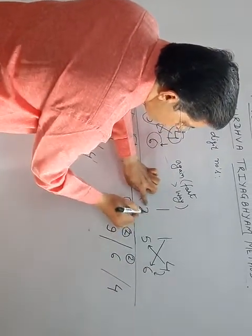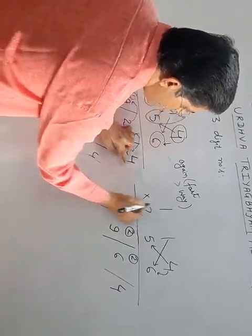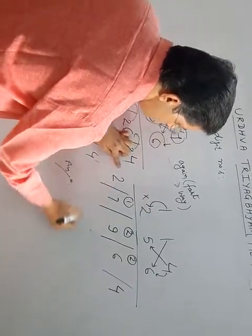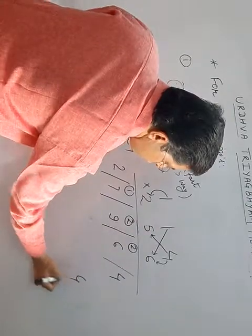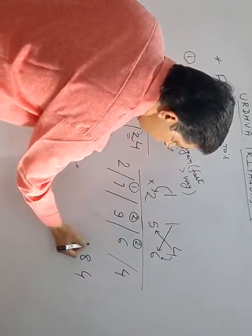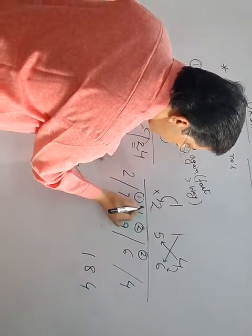1 times 5 is 5. 1 times 2 is 2. 5 plus 2 is 7. And last one is 1 times 2 is 2. Then, what is our last answer? 4, 6 plus 2, 8. 9 plus 2 is 11. 1 is here. Carry over 1.